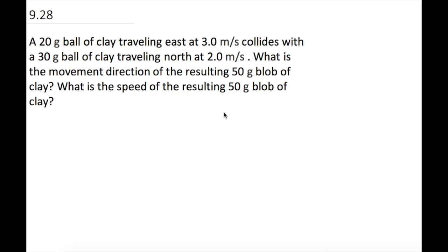A 20-gram ball of clay traveling east at 3 meters per second collides with a 30-gram ball of clay traveling north at 2 meters per second. What is the movement direction of the resulting 50-gram blob of clay? And what is the speed of the resulting 50-gram blob of clay?